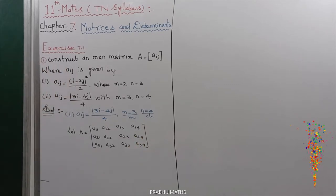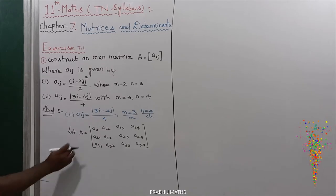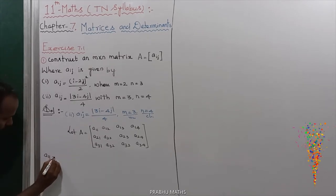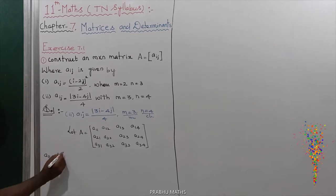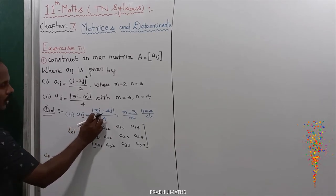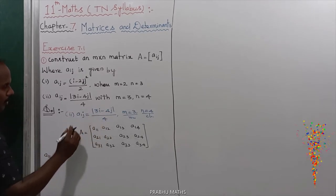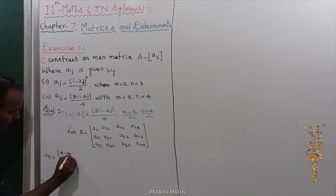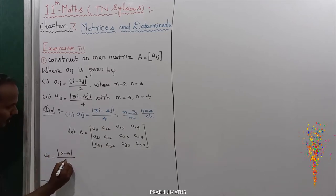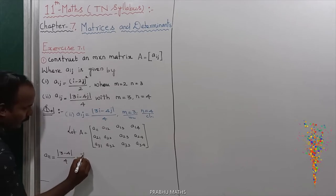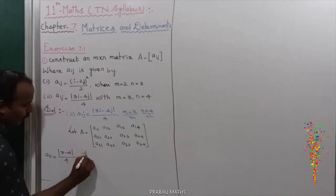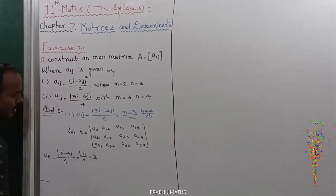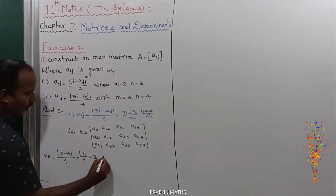First, compute A11. A11 equals the modulus of 3 times 1 minus 4 times 1, divided by 4. That is the modulus of 3 minus 4, which is modulus of minus 1, divided by 4. So A11 equals 1 by 4.